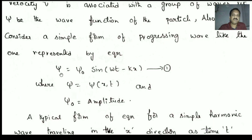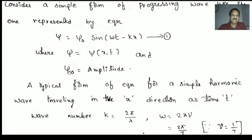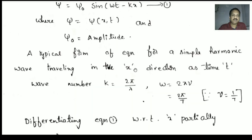Psi represents a wave function, where psi is a function of x and t. Psi₀ gives the amplitude. This is a typical form of equation for a simple harmonic wave traveling in the x direction as time t.